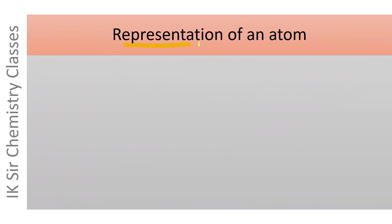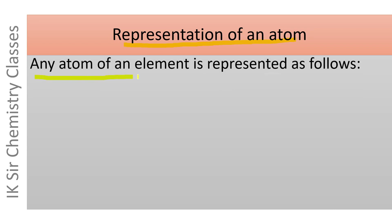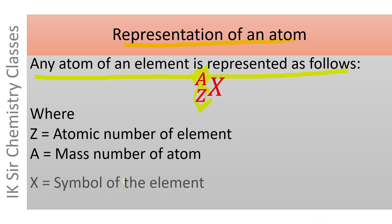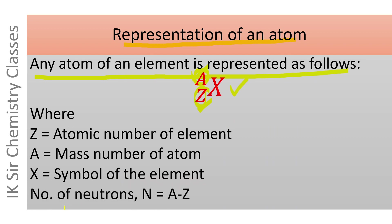Now, representation of an atom: any atom of an element is represented as X with subscript Z and superscript A, where Z is the atomic number of the element, A is the mass number, and X is the symbol of the element. The number of neutrons can be calculated by subtracting Z from A — that is, A minus Z equals the number of neutrons.